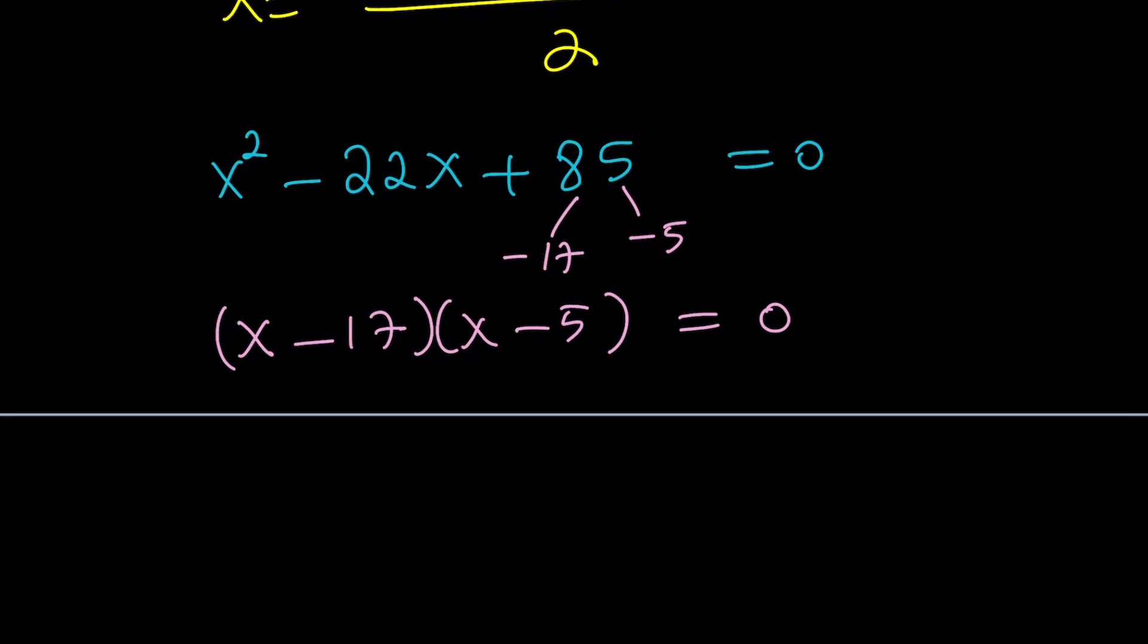So what do you get from here? Two solutions. x minus 17 equals 0 gives us x equals 17. x minus 5 equals 0 gives us x equals 5. Great.